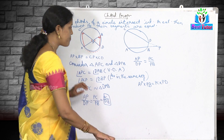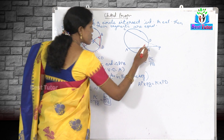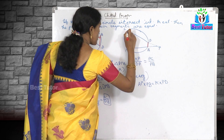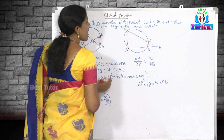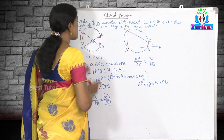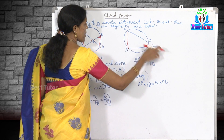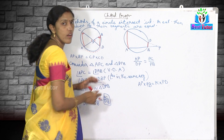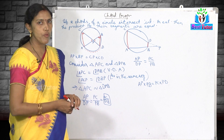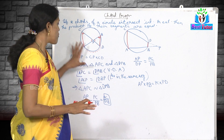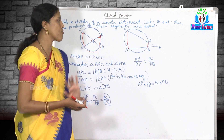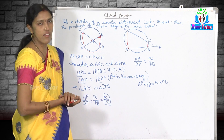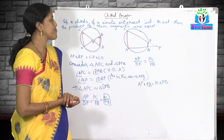How about the second case? I will join these two points and these two points. I am going to consider triangle APC and triangle BPD and we need to prove that they are similar. Once they are similar, the same proof will work out for those triangles as well.